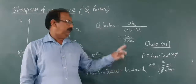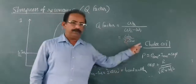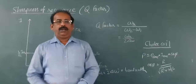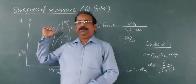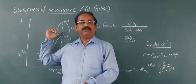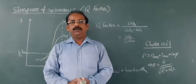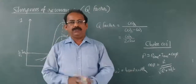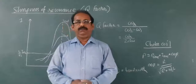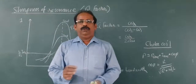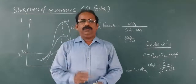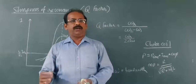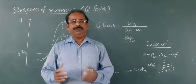This is all about choke coil, sharpness of resonance phenomena, and the parallel resonance circuit. Here is the end of the theory part of this chapter on AC circuits.